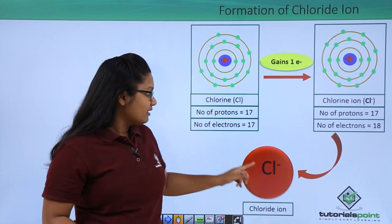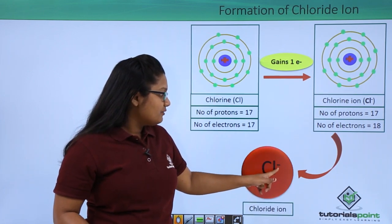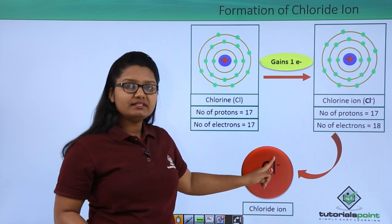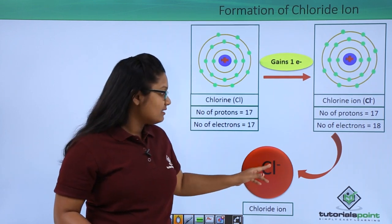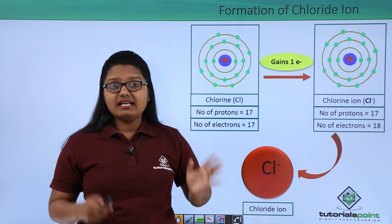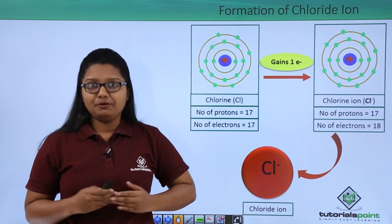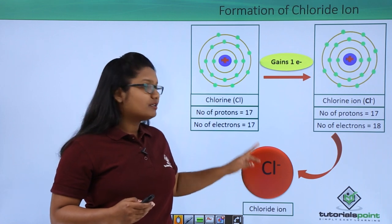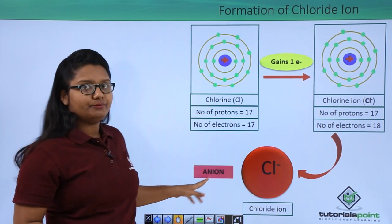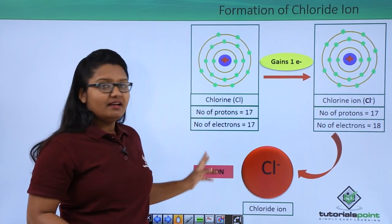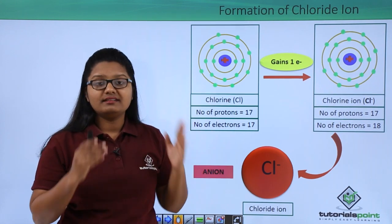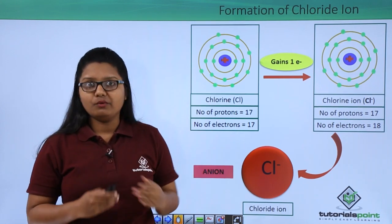The negative sign is written at the top right corner of the symbol of chlorine. Any negatively charged ion is called an anion, so this negatively charged chloride ion is called an anion. Now let us see how these two atoms combine to form the sodium chloride molecule.